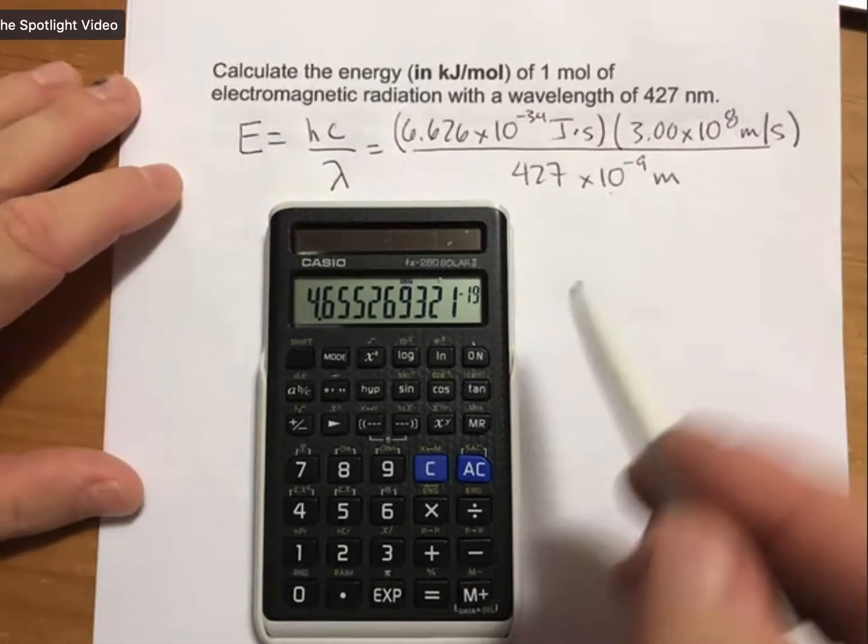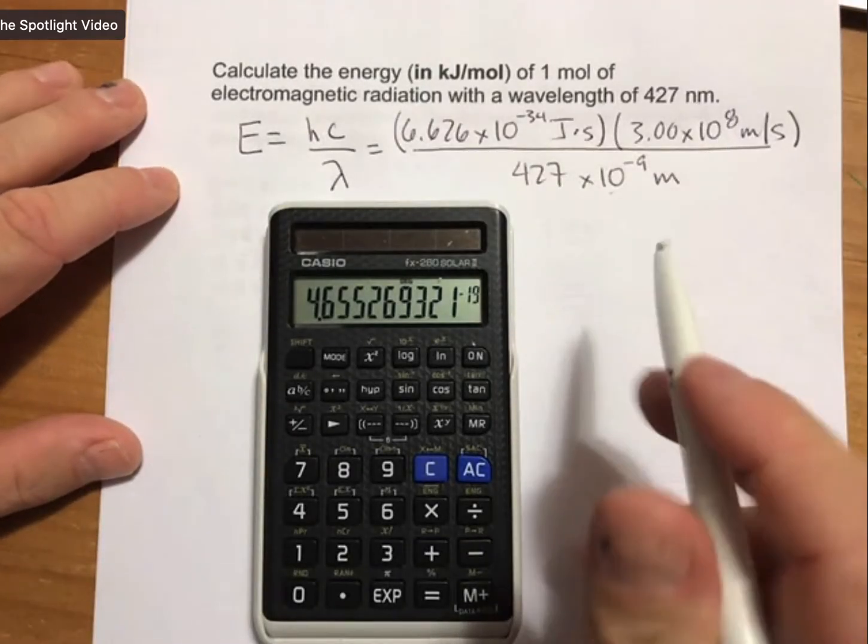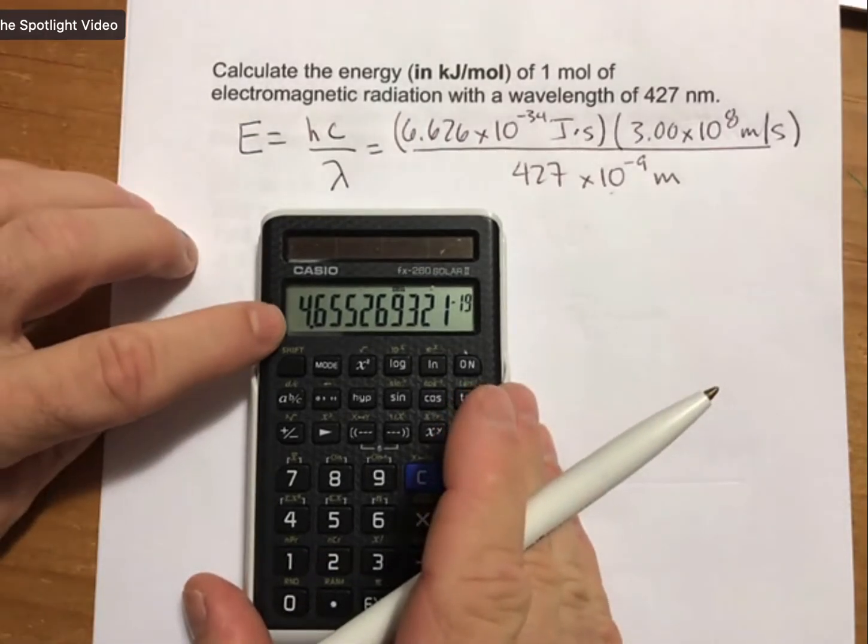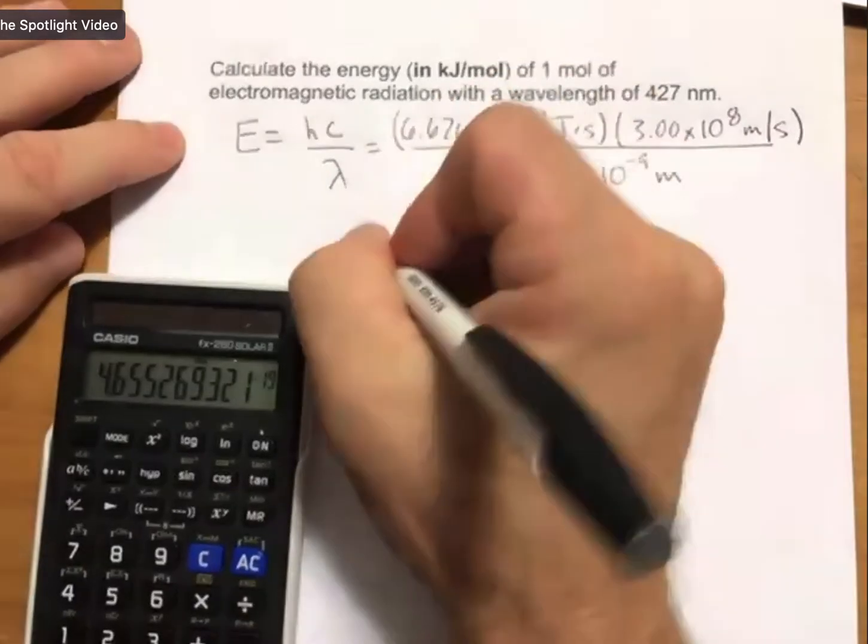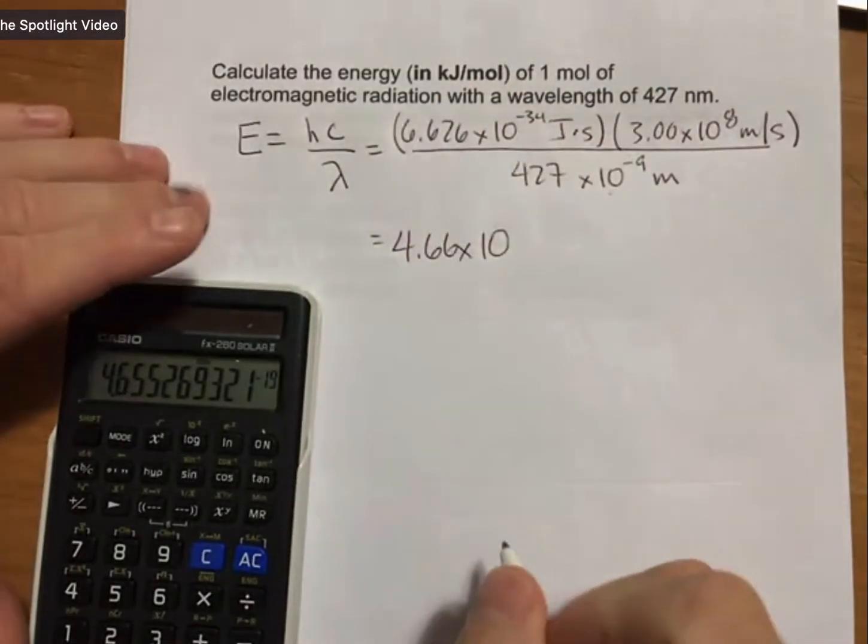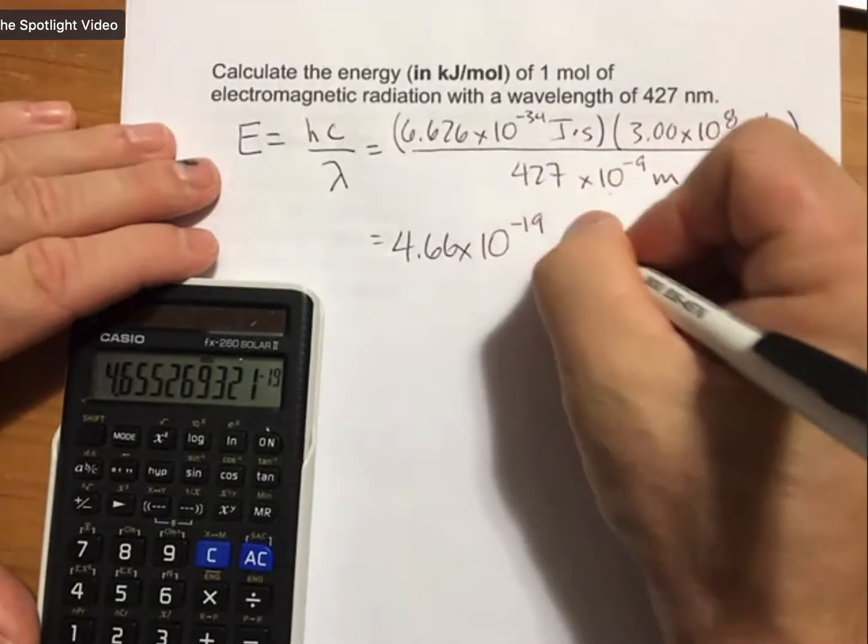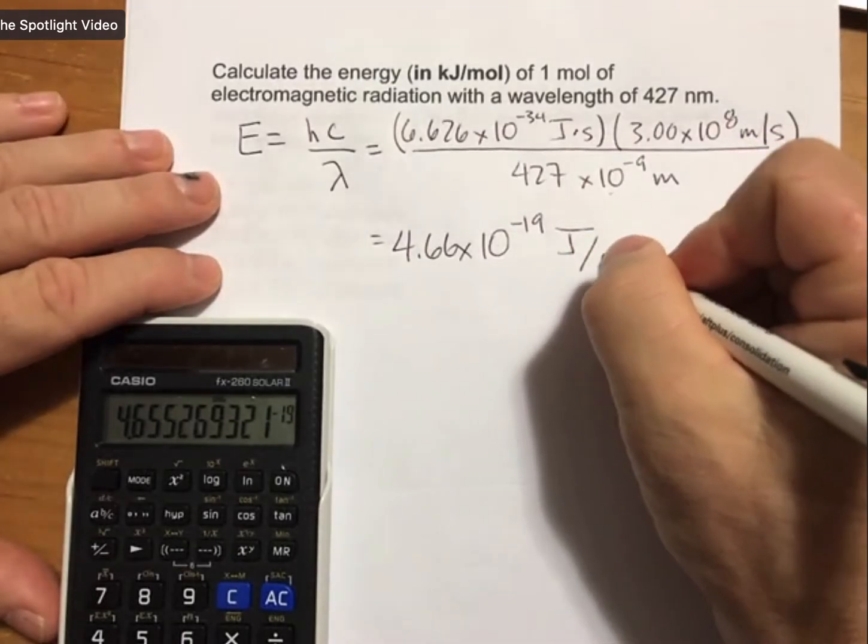But it is easy to mess up these calculations and we'll start to build up our chemistry intuition about this. So to 3 sig figs, it's going to be 4.66 times 10 to the minus 19. And we said that has units of joules, but that's also going to be joules per photon.